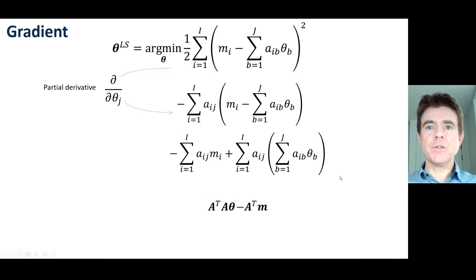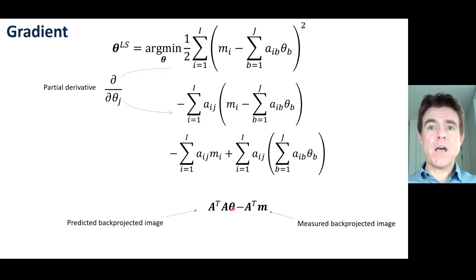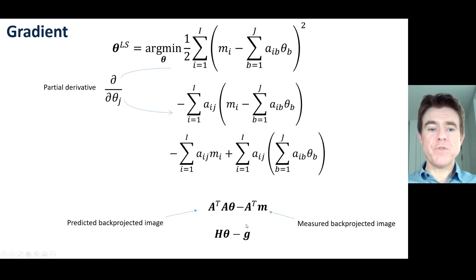Rearranging, we have a difference between two vectors. On the right-hand side, A transpose applied to your measured data vector m is what we often call the back-projected image in an imaging context — you take your measured data and back-project it by applying the transpose of the system model. Then we have a prediction of that back-projected image: given any theta, you forward-model it using system matrix A and then back-project to get a prediction. We therefore have this simple expression for a gradient vector, where we now consider all theta j values together.